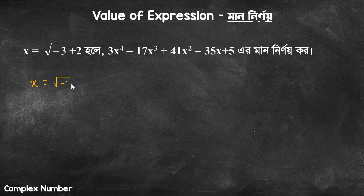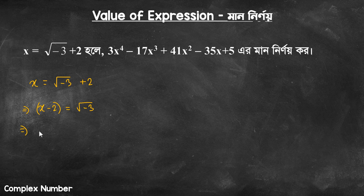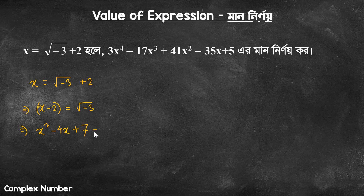x squared root over of negative 3 plus 2. So we will have to get the answer. x minus 2 equals root over of negative 3. Root of negative 3 is root of 3 times i. Let's square: x squared minus 4x plus 4, that is negative 3. Plus 7 equals 0. So x squared minus 4x plus 7 equals 0.